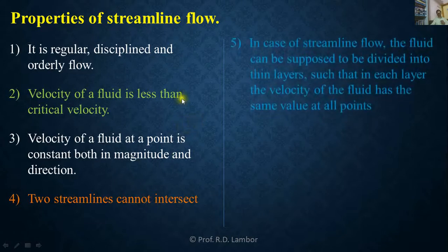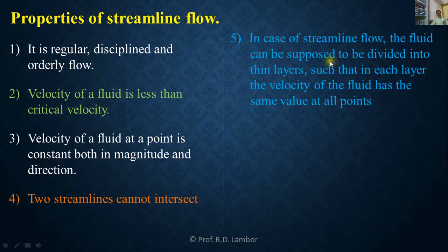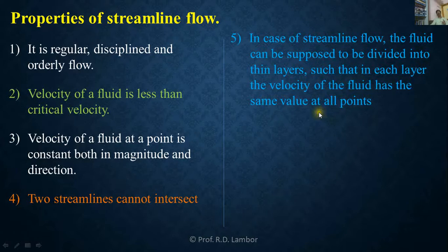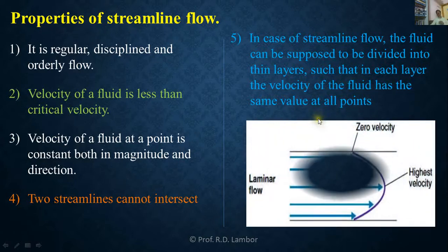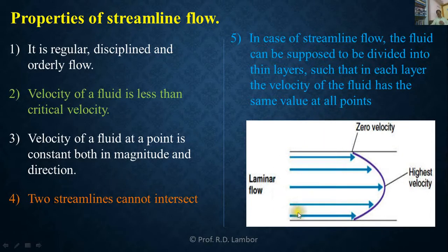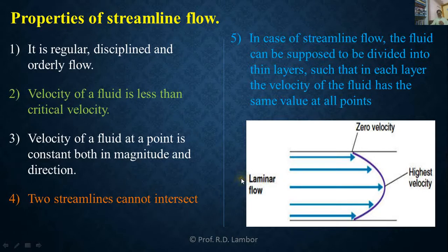Fifth property: when flow is streamlined, fluid can be supposed to be divided into number of thin layers such that in each layer, velocity of the fluid has the same value at all points. Sixth property: in case of streamline flow over a plane surface, the fluid can be supposed to be divided into plane layers parallel to each other and also parallel to the plane surface.